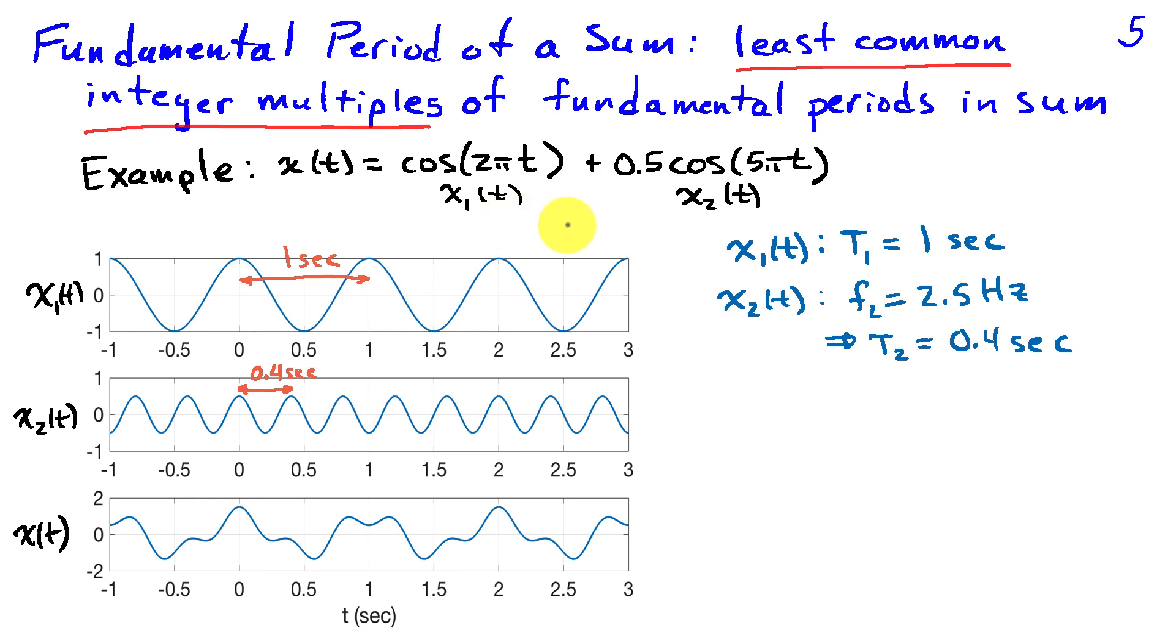Now if we look at x1 of t, the fundamental period is 1 second because the frequency of this cosine is 1 hertz. x2 of t has a fundamental frequency of 2.5 hertz.